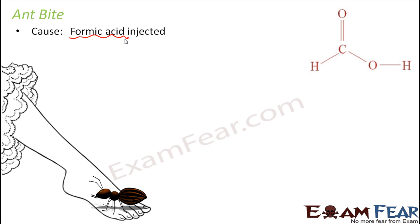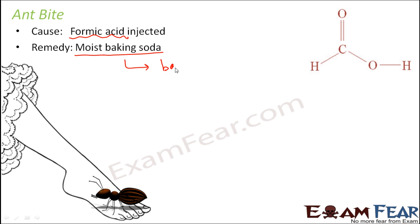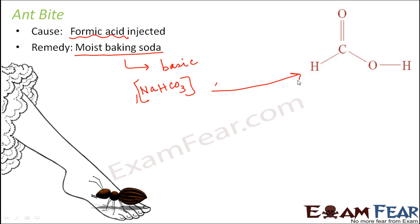So how do we cure it? For that, we have the remedy of moist baking soda. Baking soda is basic in nature — it is nothing but sodium bicarbonate, NaHCO3. Moist baking soda means baking soda along with some water. When you apply this, the basic nature of baking soda will neutralize the effect of formic acid, and that is how the effect of the acid will be reduced and you will be cured of the effects of the ant bite.